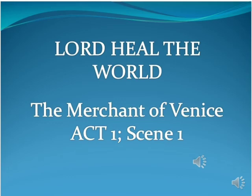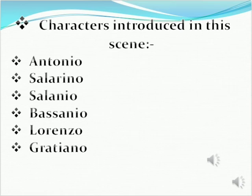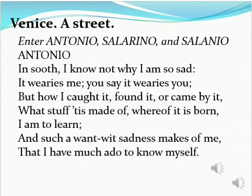The characters introduced in this scene are Antonio, Salarino, Salanio, Bassanio, Lorenzo, and Gratiano. The first scene takes place in a street of Venice, and the characters present are Antonio, Salarino, and Salanio.